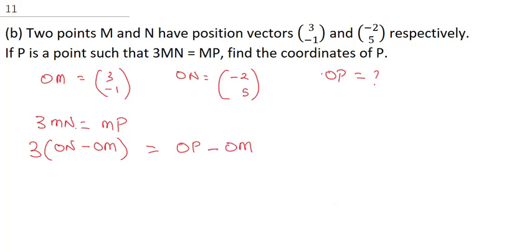Now, having established this, we are going to put in the values. So, this is going to be 3 multiplied by, what's our O N? It's minus 2 and 5. Then, this will be minus, O M is 3 minus 1. So, this is going to be equal to, now, O P is what we are looking for. So, we are going to just write it as O P. Subtract. Now, O N is what, 3 minus 1.